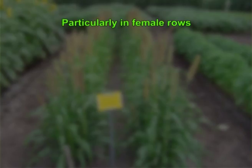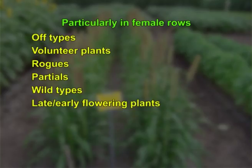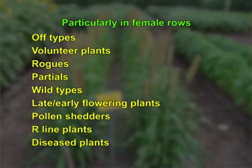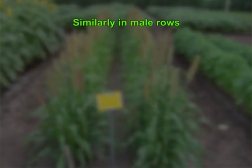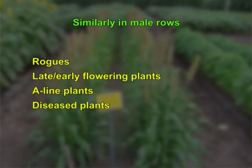Particularly in female rows, off-types, volunteer plants, rogues, partials, wild types, late or early flowering plants, pollen shedders, R line plants, and diseased plants are to be identified and carefully removed. Similarly, in male rows, rogues, late or early flowering plants, A line plants, and diseased plants have to be rogued out.